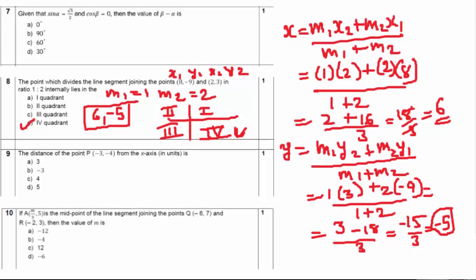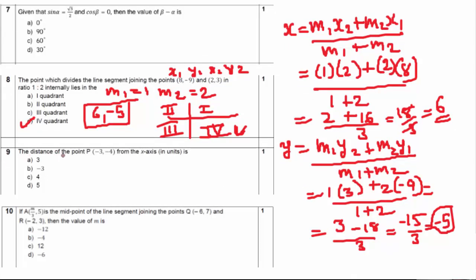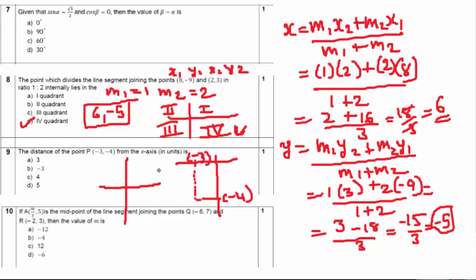Next question: find the distance of the point P(−3, −4) from the x-axis. On the graph, the point (−3, −4) lies in the third quadrant. The distance from the x-axis is simply the absolute value of the y-coordinate. Students often mistakenly use −3, but the correct value is the y-coordinate distance, which is |−4| = 4 units.